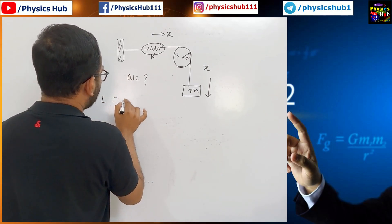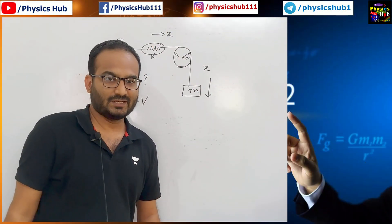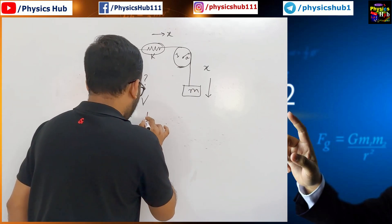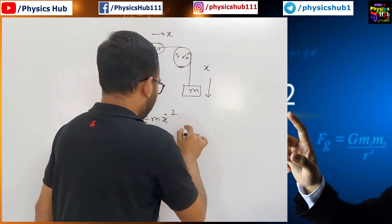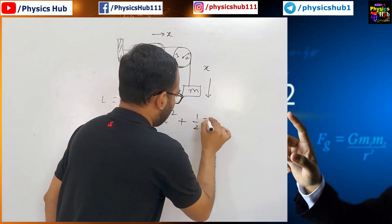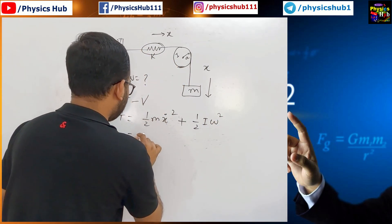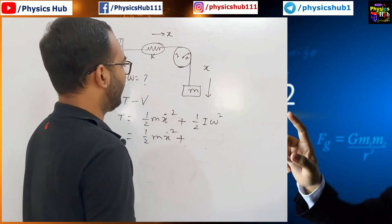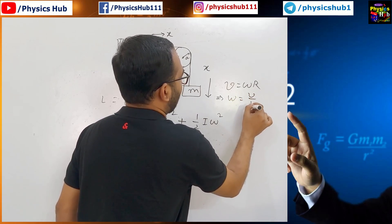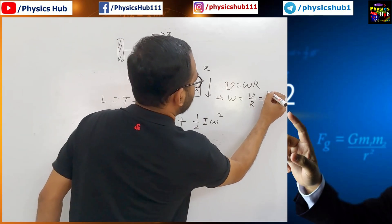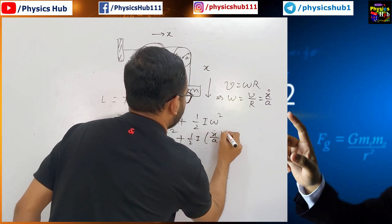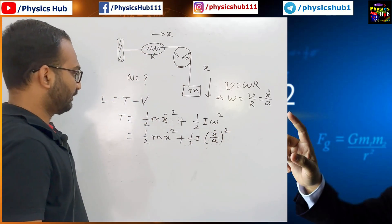So, we have to find out the Lagrangian which equals T minus V. Let us calculate T kinetic energy. What will be the kinetic energy here? One degree of freedom. X is the only degree of freedom. So, half m x dot square. This will be the kinetic energy plus this is the translational kinetic energy and in addition rotational kinetic energy will come. We know the formula half I omega square. This is the rotational kinetic energy. Now, this is half m x dot square plus. What is this omega? We know the relationship V equals omega R. R is the radius. So, your omega equals V upon R. What is this V? V is nothing but x dot and R is given to you as A. So, half I omega is x dot upon A whole square.